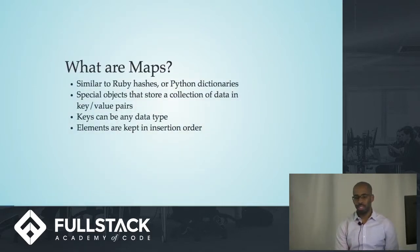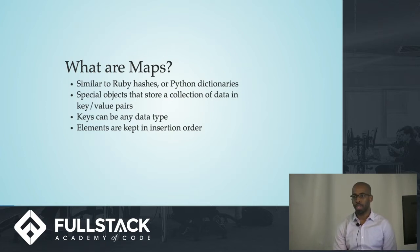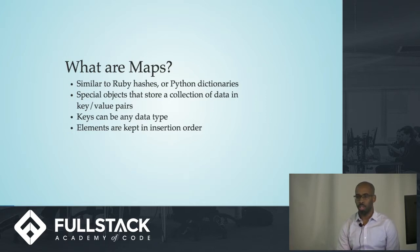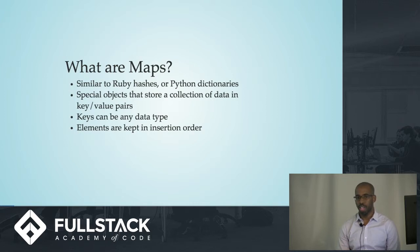So first up, what are maps? I'm not talking about the .map method on arrays — I'm talking about something very different. If you're familiar with hashes from Ruby or dictionaries from Python, they're very similar. They're special objects that hold a collection of data in key-value pairs. For example, if I had a phone book and wanted to keep it in an object where every key is a name and every value is a number, this would be better suited for a map instead of a basic object.